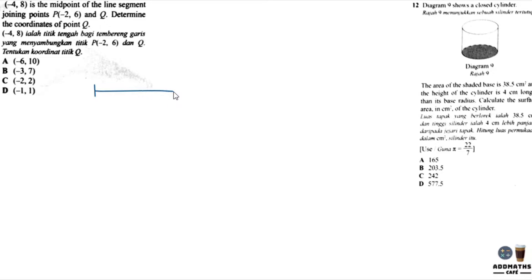So this means that I have a line where P is at negative 2, 6 and Q here which does not have any coordinate. Let's say this is x, y and negative 4, 8 is the midpoint here.